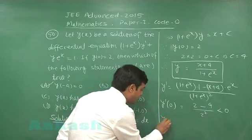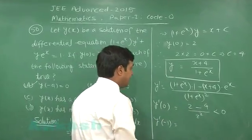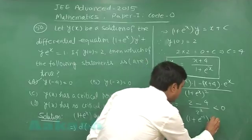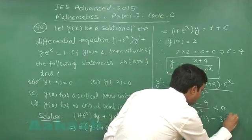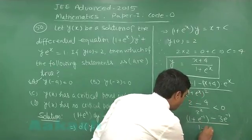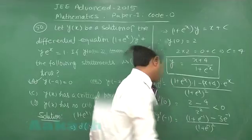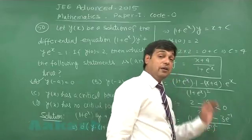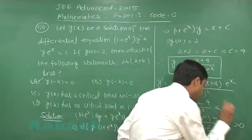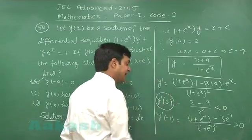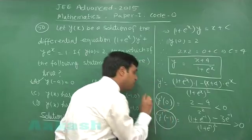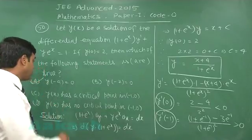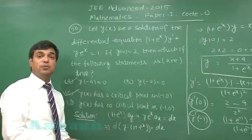If I look at the derivative at minus 1, I observe it is 1 plus e to the power minus 1 minus 3 into e to the power minus 1 divided by 1 plus e to the power minus 1 whole square. So, it is 1 minus 2 upon e that is a positive number. So, we can clearly see that the derivative at 0 is negative while at minus 1 it is positive. So, it has a critical point in the interval minus 1 to 0. So, option c is correct. Let us move to the next one.